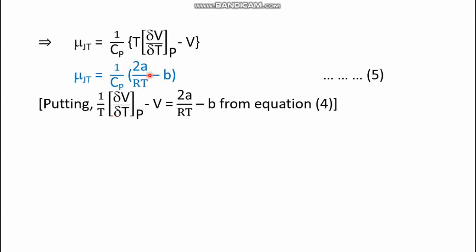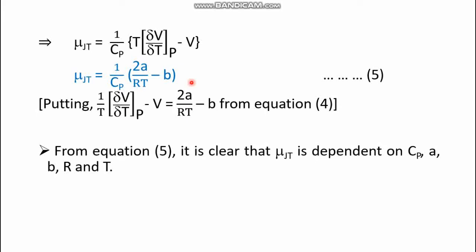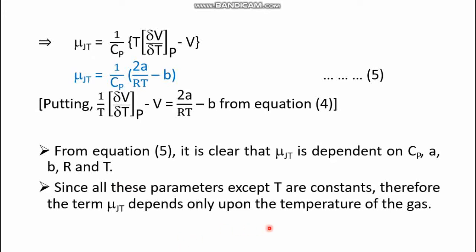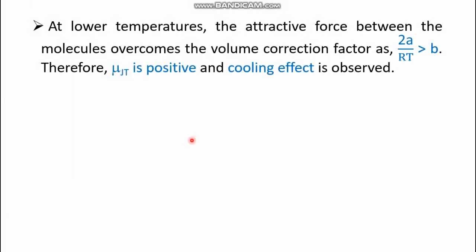From equation number five, we can draw conclusions and find the inversion temperature. It is clear that the Joule-Thomson coefficient depends on Cp, a, b, R, and T — five parameters. Since Cp, a, b, and R are all constants, only temperature T is a variable. Therefore, μ_JT is a function of temperature only.